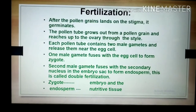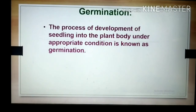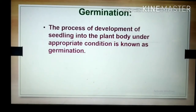The zygote gives rise to the embryo, and the endosperm gives rise to the nutritive tissue. This is the process of fertilization. Once fertilization occurs, the zygote divides and re-divides many times and gives rise to the seed. Once seed formation occurs, the seed germinates — the process of development of seedlings takes place — and those seedlings give rise to a new plant body under appropriate conditions. This process is called germination.